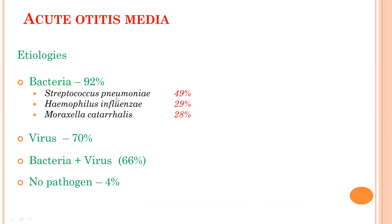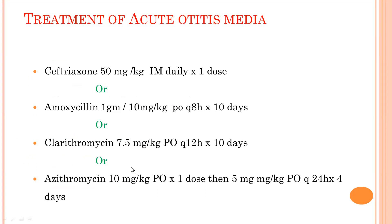Acute otitis media: bacteria are responsible for 92% of cases, viruses for 70%, bacteria plus virus combined for 66%, and no pathogen can be isolated in 4% of cases. Of the bacteria, Streptococcus pneumoniae accounts for 49%, Haemophilus influenzae 29%, and Moraxella catarrhalis 28%. Treatment: ceftriaxone 50mg/kg IM daily; amoxicillin 1g or 10mg/kg orally 8-hourly for 10 days; clarithromycin 7.5mg/kg orally 12-hourly for 10 days; or azithromycin 30mg/kg oral single dose then 5mg/kg 12-hourly for 4 days.